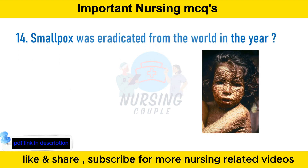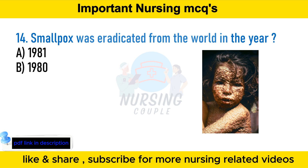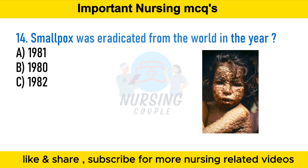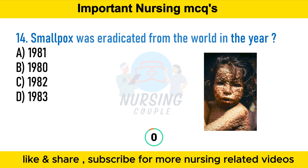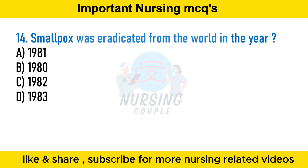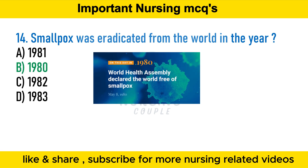Smallpox was eradicated from the world in the year: option A 1981, option B 1980, option C 1982, option D 1983. The answer is option B 1980. Smallpox is an acute infectious disease that begins with high fever, headache, and back pain, then proceeds to an eruption on the skin that leaves the face and limbs covered with cratered pockmarks.